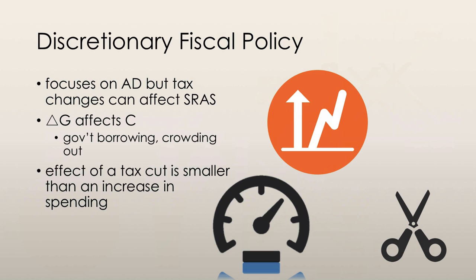Discretionary fiscal policy focuses on changing aggregate demand by focusing on tax rates and government spending. However, cutting taxes affects the supply side and crowds out investment, so the government needs to keep that in mind when it comes out with a fiscal stimulus package. The government also needs to take into account the multiplier effect that follows any change in autonomous spending — if it increases government spending, consumption will be induced, which will shift the aggregate demand curve more than solely the amount of the change in government expenditure.